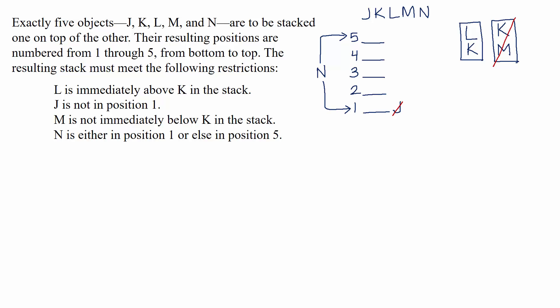We've notated all of the rules either directly into the diagram or off to the side so that we don't forget them. Now we can focus on one of the most important aspects of analytical reasoning: making deductions. What definites can we deduce that weren't explicitly told to us? Rule one says L is immediately above K. If L is always immediately above K in the stack, then L can't be first, and K can't be fifth — because L can't be on the bottom and K can't be on the top.